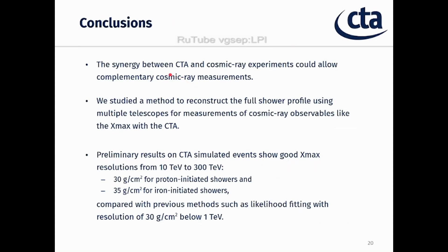In conclusion, there could be a synergy between CTA and cosmic ray experiments that would allow complementary cosmic ray measurements. We have studied a method to reconstruct the full shower profile using multiple telescopes for measurement of cosmic ray observables like Xmax. Preliminary results show resolutions of 30 g/cm² for proton and 35 g/cm² for iron events. Compared to previous methods such as likelihood fitting, our results are not yet competitive, but we show good results with an alternative method.